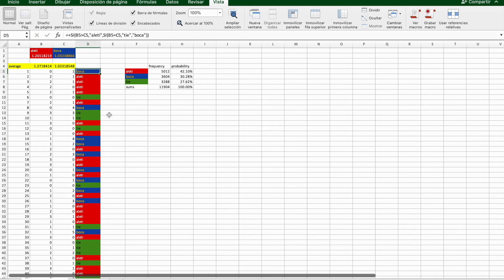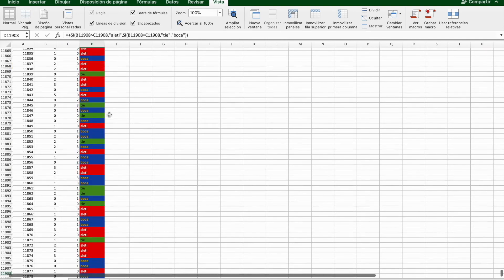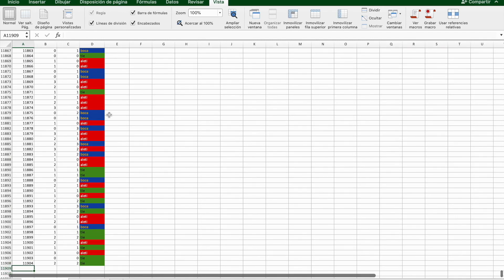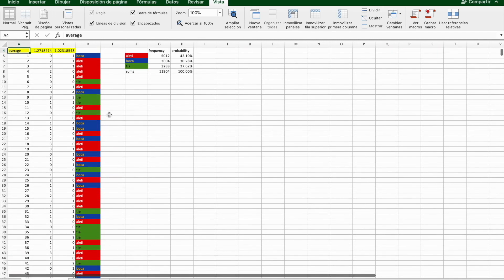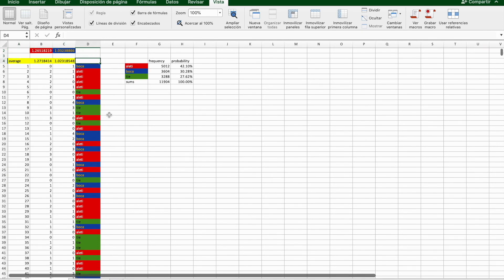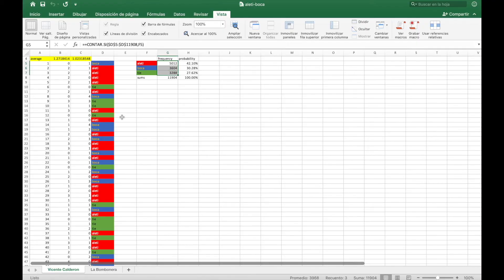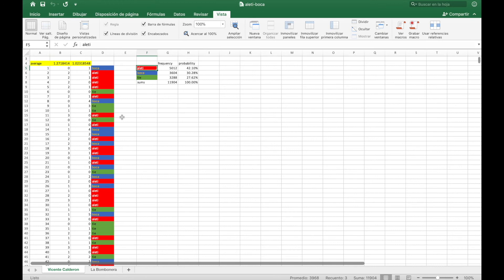We can use our function, the function we just programmed, with these two parameters for Atleti and for Boca. For instance, in this case Boca 1, in this case Atleti 1, and so on and so forth, up to almost 12,000 simulations. At the end, we can just compute the frequency of all these simulations and see in how many times Atleti won, how many times Boca won, and how many times we had a tie.